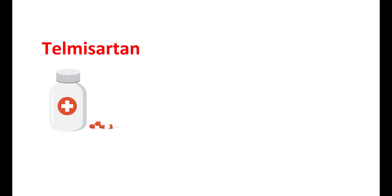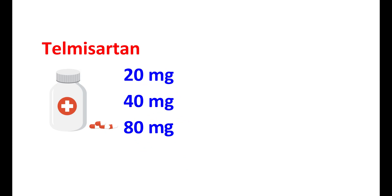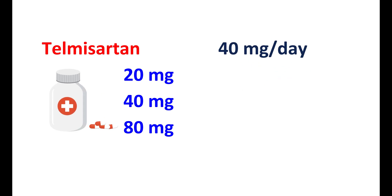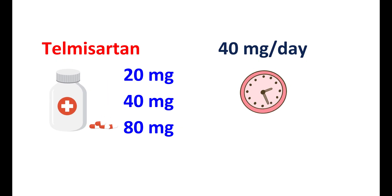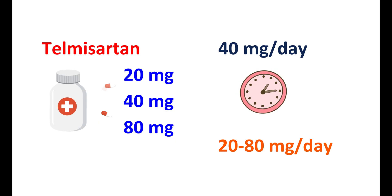Telmisartan is available as a tablet at different strengths: 20 mg, 40 mg, and 80 mg. When used for treating hypertension, it can be started at a dose of 40 mg per day initially. The dose may be slowly increased or decreased based on clinical response, such that the maintenance dose is 20 to 80 mg per day.